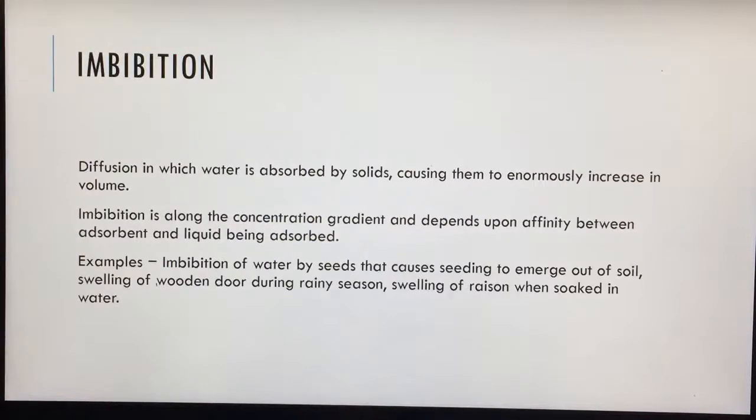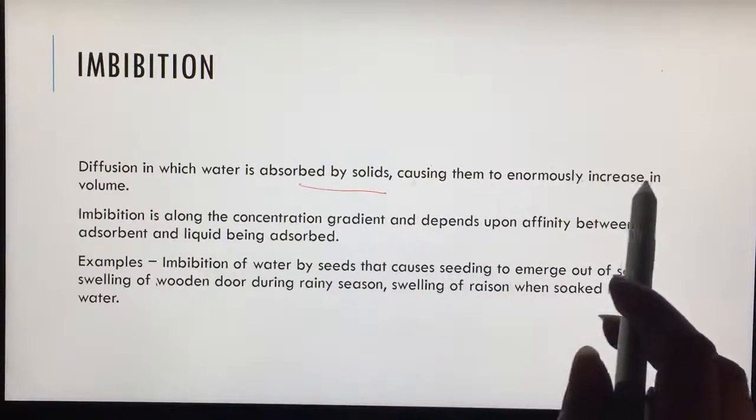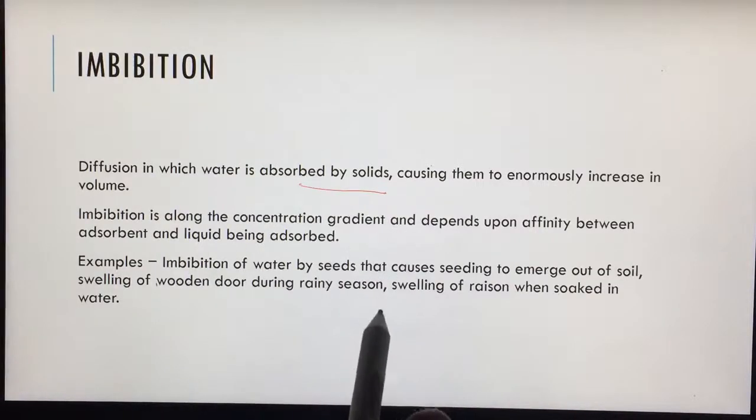What is imbibition? The most common example which people know is in rainy seasons, the doors of the houses, wooden doors basically swell up. The reason is they absorb water from the atmosphere and in direct contact and they swell up. Imbibition is diffusion in which water is absorbed by solids causing them to enormously increase in volume. Imbibition is also along the concentration gradient because in wood there is less water when you compare it with the atmosphere during rainy season. Swelling up of raisin is also an example when it is soaked in water.